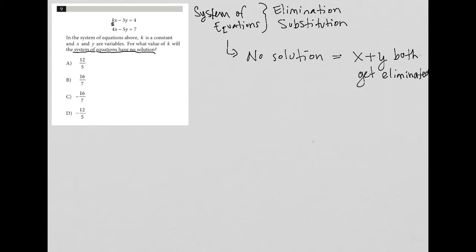Okay, so then how would we, so let me just rewrite this. If I have kx minus 3y equals 4 and 4x minus 5y equals 7, what could I do to make sure that both x and y get eliminated? Well, because I don't know what k is, therefore I don't immediately know how to eliminate x.